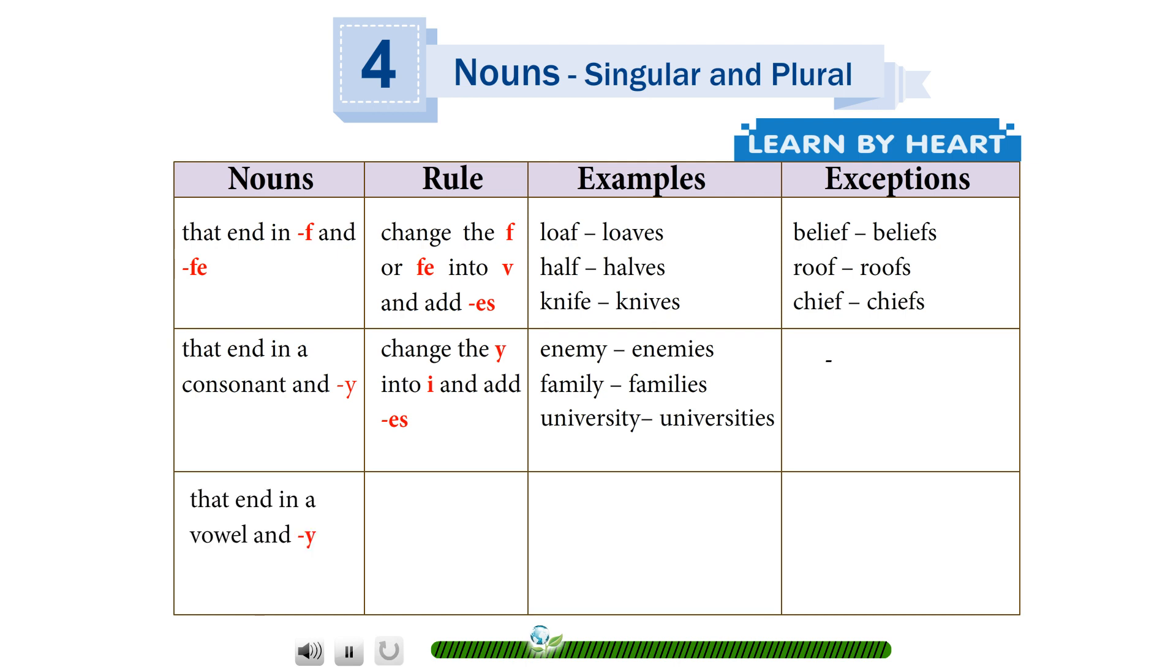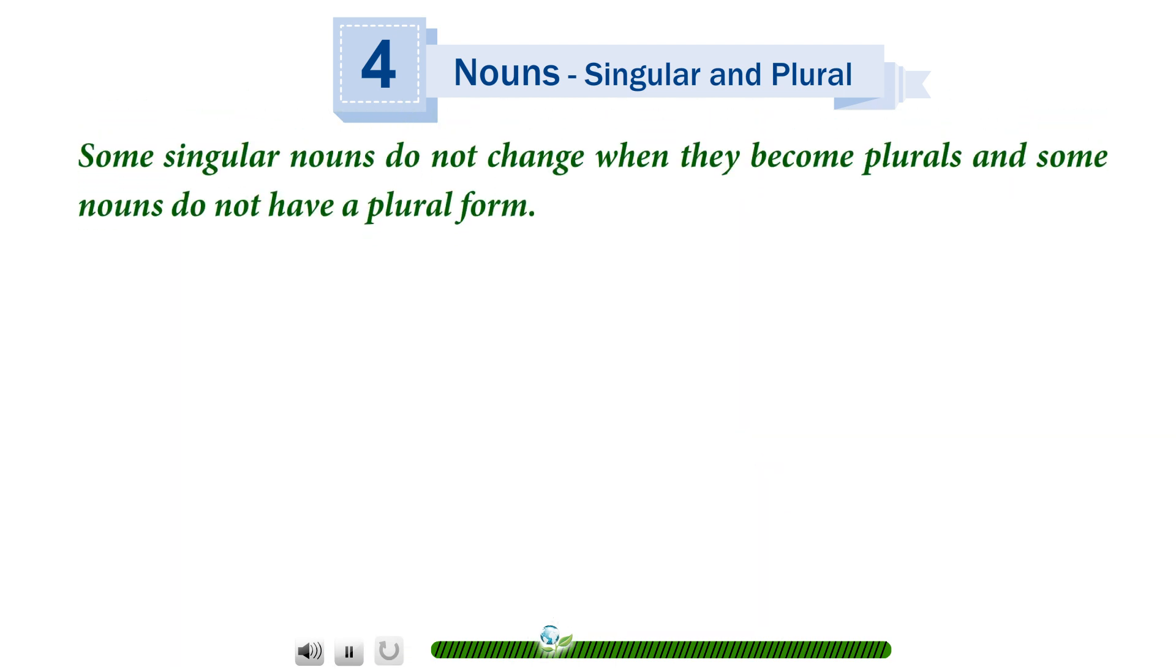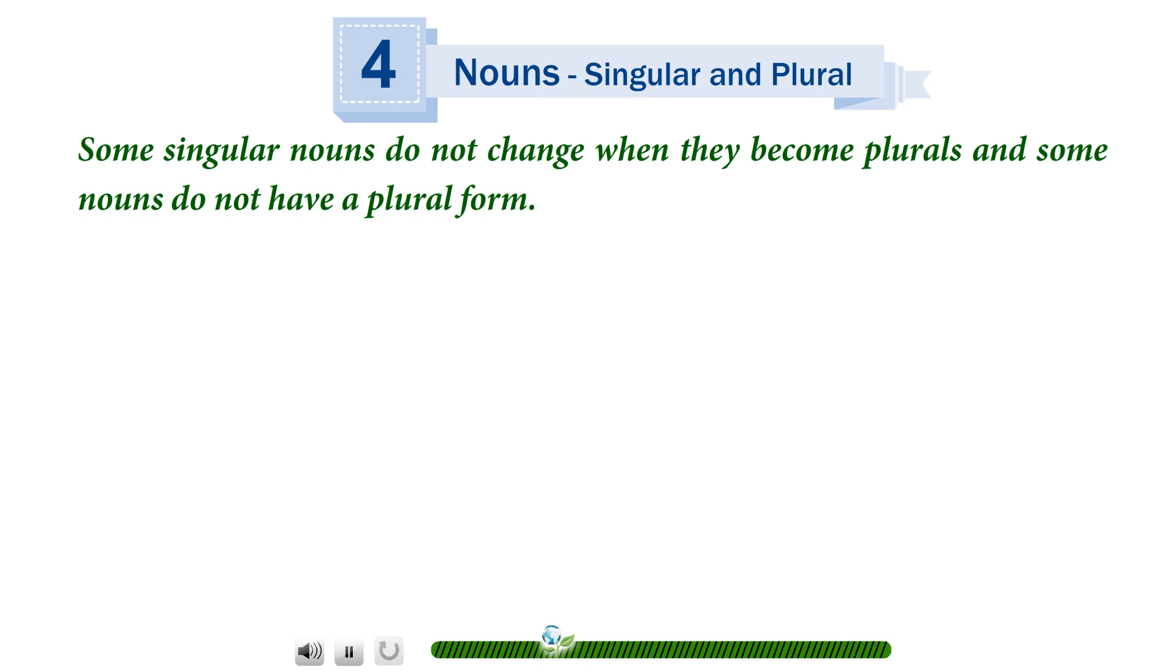That end in a vowel and y add es: turkey becomes turkeys, monkey becomes monkeys, valley becomes valleys. Some singular nouns do not change when they become plurals and some nouns do not have a plural form. Some nouns are same in their singular and plural form